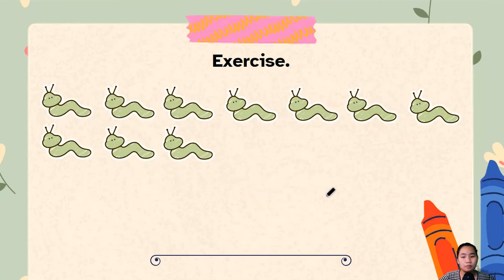Now, let's move on to the next part. I have a bunch of cute little worms over here and I'm gonna start counting how many worms we have in total. One, two, three, four, five, six, seven, eight, nine, ten. Once again, we have ten worms.